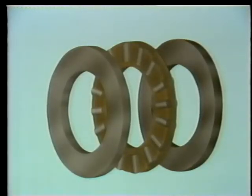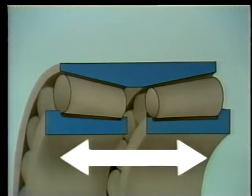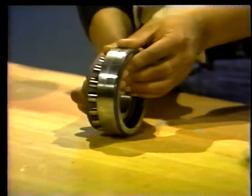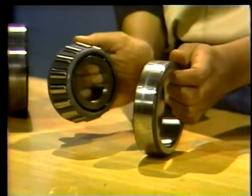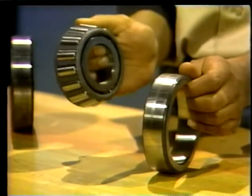The last type, the roller thrust bearing, is used to carry heavy axial loads and can't handle much radial load. Like the ball thrust bearing, its rings are parallel to each other. Two variations on these bearing types are multiple row bearings, used when axial loads in either direction must be dealt with or when a single row might not handle the load, and separable bearings, in which one or both rings may be separated from the bearing to allow easier installation.